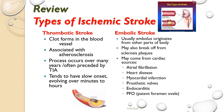An embolic stroke occurs when an embolus originates from other parts of the body — it can break off from sclerosis plaques and usually comes from cardiac sources. The big culprit — put a star next to it — is AFib. AFib puts you at such a high risk of embolic stroke. Other sources include heart disease, myocardial infarction, prosthetic valves, endocarditis, or a patent foramen ovale. So it's either a clot that forms at the site, or something that breaks off and travels up.